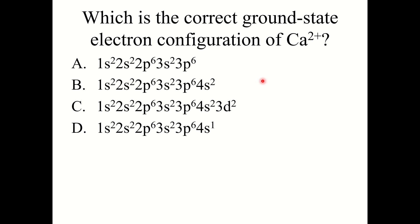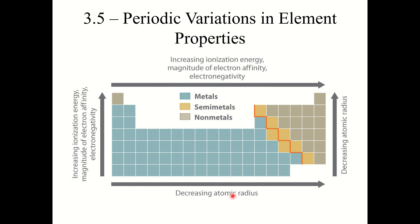One more knowledge check: what is the correct ground state electron configuration of Ca2+ (calcium 2+ cation)? The correct answer is A: 1s2, 2s2, 2p6, 3s2, 3p6. Neutral calcium has those electrons plus 4s2; to form the plus 2 cation, we remove those two 4s electrons, leaving us with answer A.